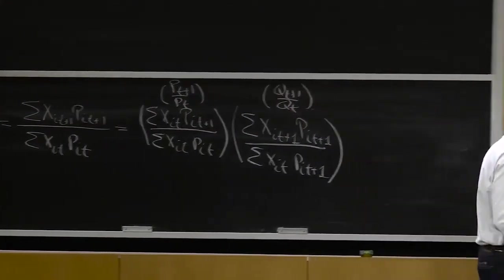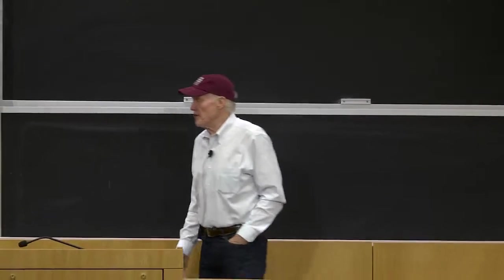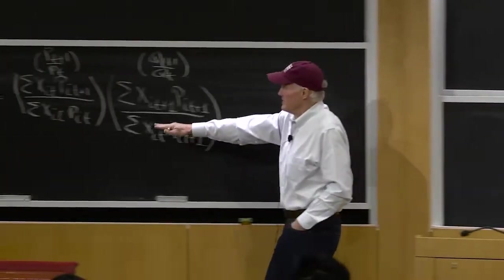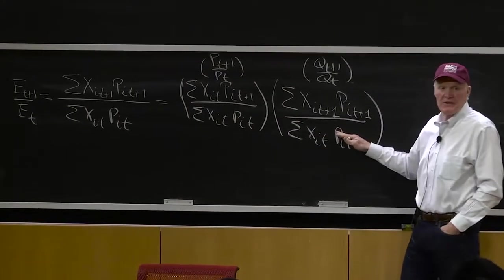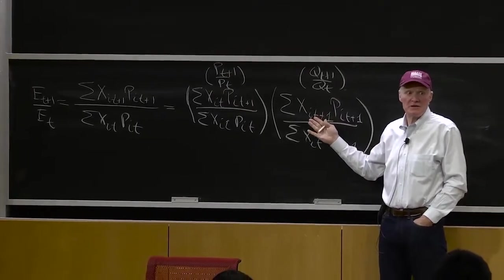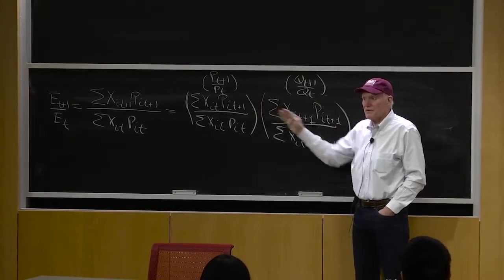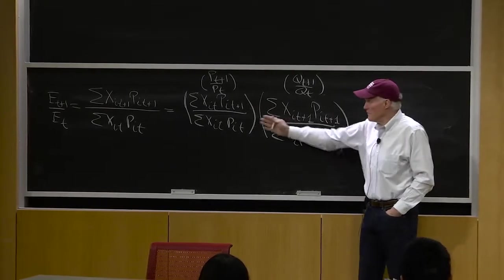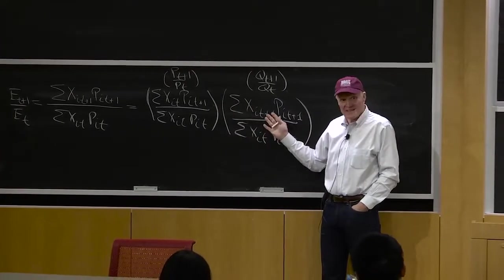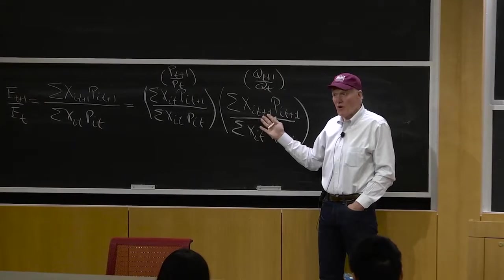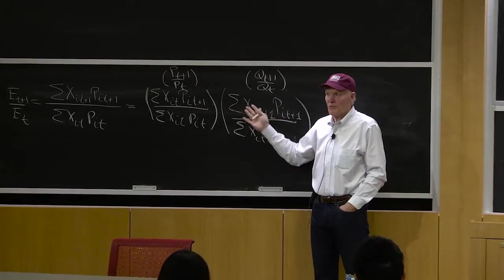So that would be one way to decompose the growth in price and quantities into a price index here and a quantity index here. We said, well, what about this makes sense? Because, you know, I could have put my hat size here, and my hat size here, and this would also be a decomposition. The fact that I put something here and put something here would decompose this, wouldn't make any sense, wouldn't be at all helpful in thinking about the world, but it would work.